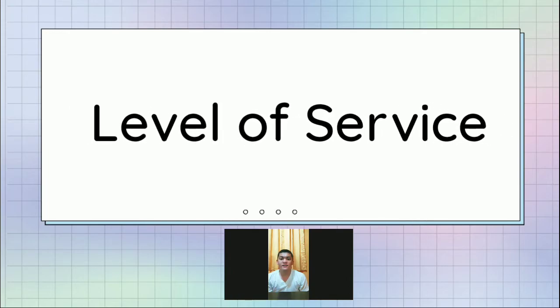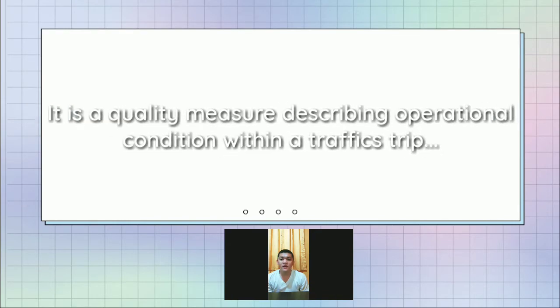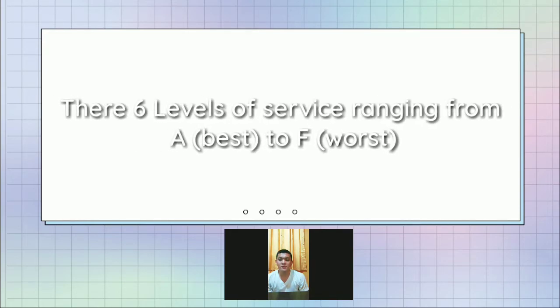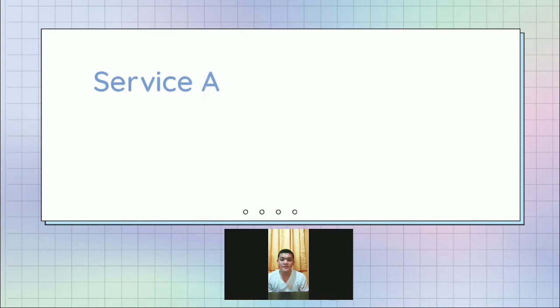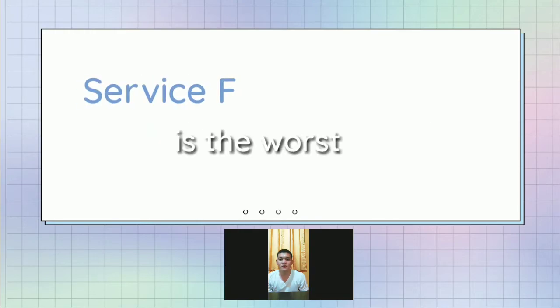Let us now try to understand the concept of level of service. Its formal definition is: it is a quality measure describing operational conditions within a traffic stream, generally in terms of such service measures as speed and travel time, freedom to maneuver, traffic interruption, and comfort. There are six levels of service that are recognized, designated from A to F. Level of service A is the best operating condition while F is the worst.